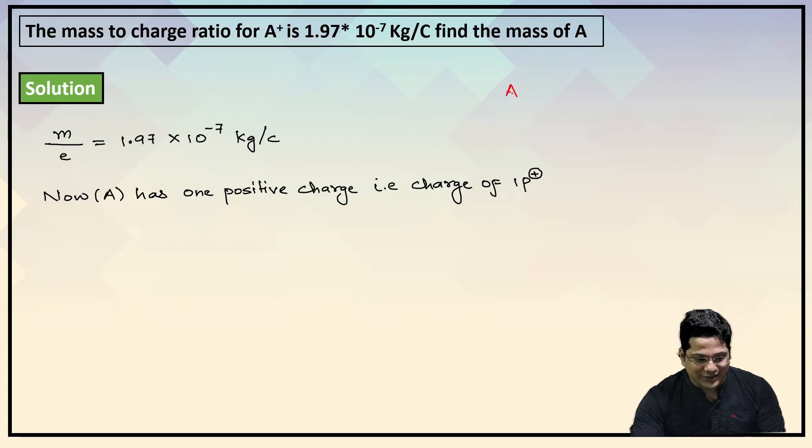If I had given you A²⁺, that would be two protons' charge. Similarly, if I had given you A⁻, then it's one electron's charge. But the part to understand here is that the electron charge we take as positive only, because mass cannot be negative. Therefore, whenever you're talking about charge of electrons or protons, we neglect the sign. Don't consider sign here.